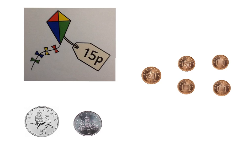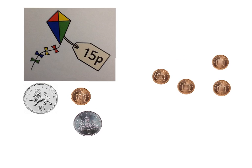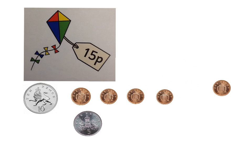Or we could use a different combination of coins to pay for something that costs 15 pence. Instead of using the 10 and the 5, we can use the 10 again, but this time we could use 5 penny coins, because that's the same as a 5 pence coin. So we would need 1 ten pence coin and 5 penny coins to pay for something that costs 15 pence.